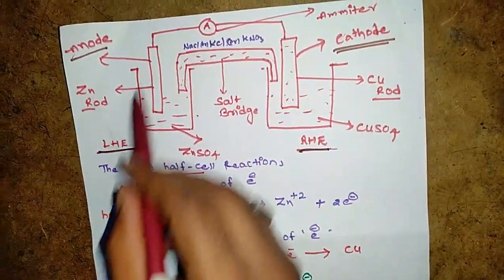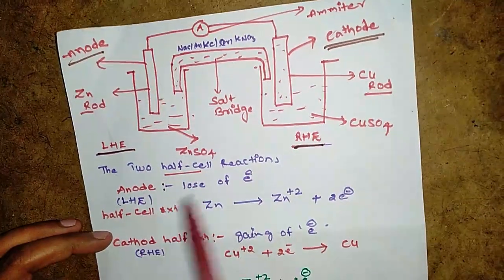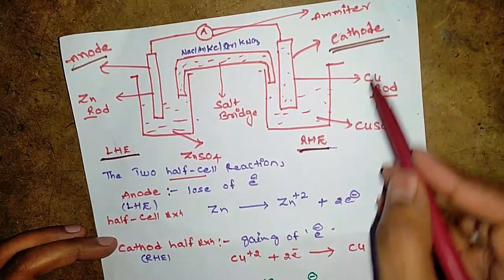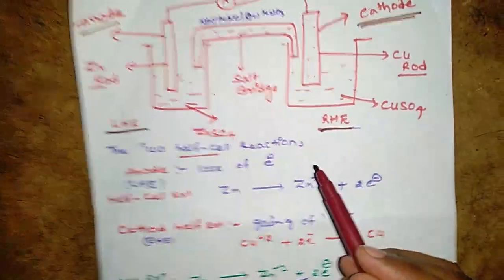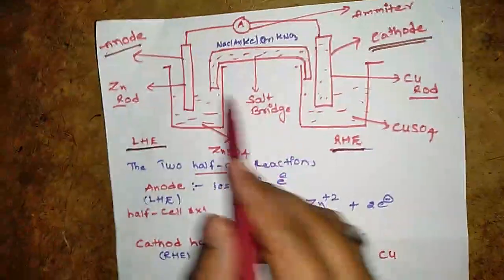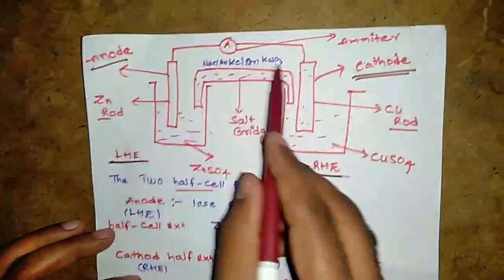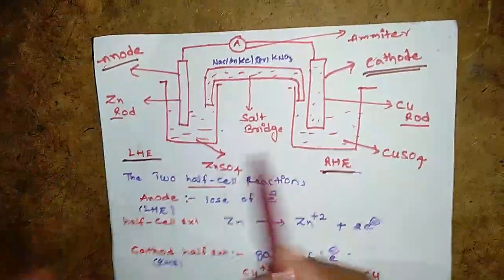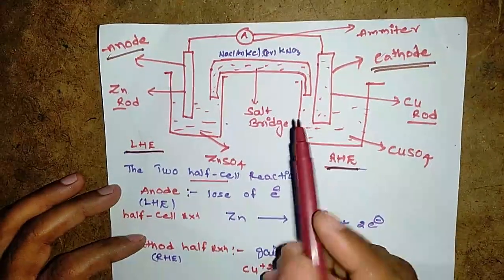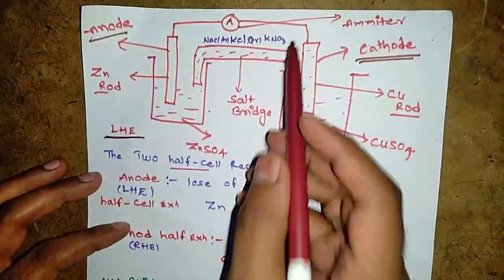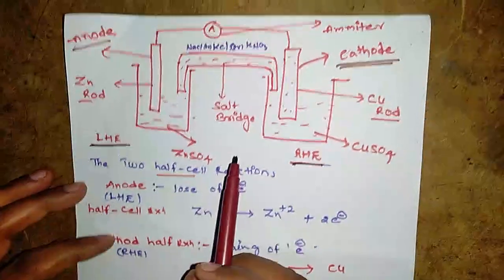The zinc rod is immersed in zinc sulfate and the copper rod is dipped in copper sulfate. These two beakers are separated with a porous NaCl or KCl salt bridge.